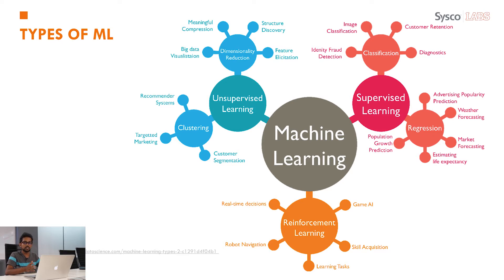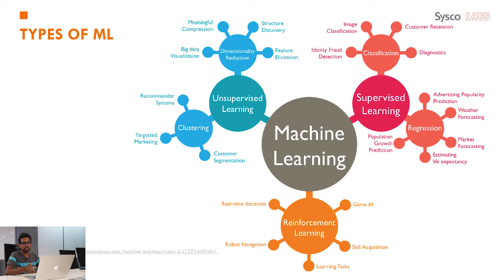In supervised learning, we have a dataset with the expected output. Using our cats and dogs example, our dataset is the set of images, and the answers are the labels — whether it is a cat or a dog. We give the data and the answers, which is why it's called supervised learning — there is a kind of teacher. There are two subcategories: classification and regression. In classification, we try to predict a categorical variable. The cats and dogs example is a classification problem because there are two classes, or labels.